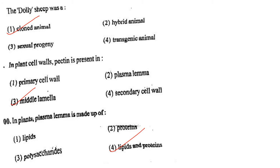Next one: In plant cell walls, pectin is present in option 1, primary cell wall; option 2, plasmalemma; option 3, middle lamella; option 4, secondary cell wall. Answer is option 3: middle lamella.